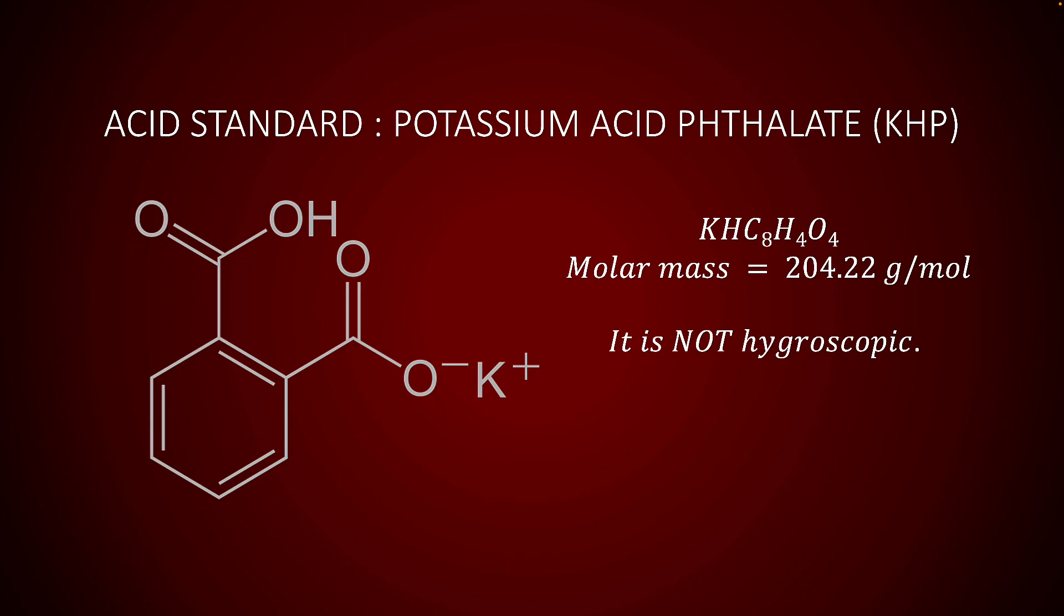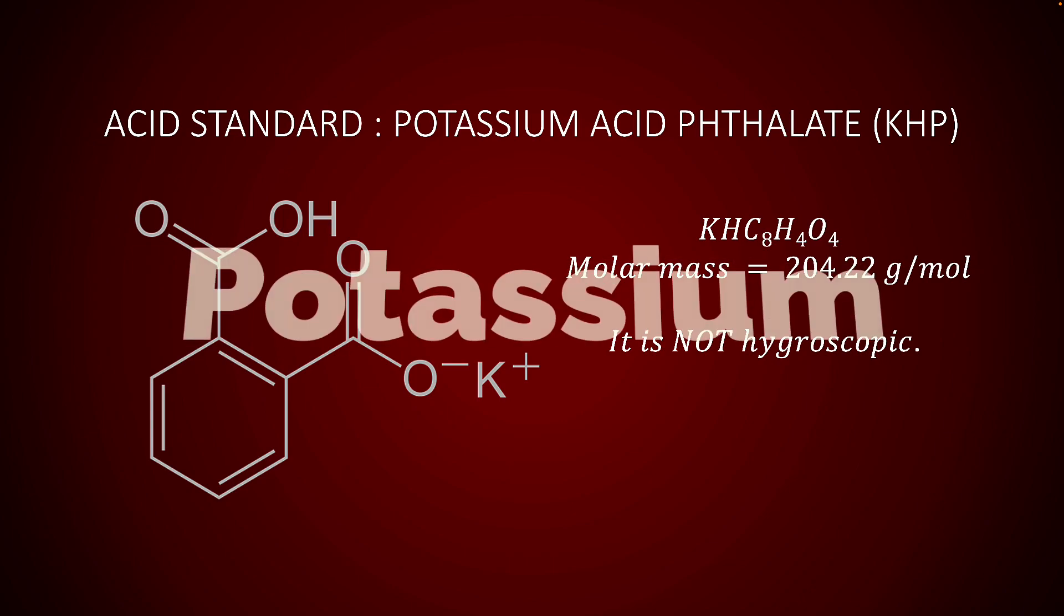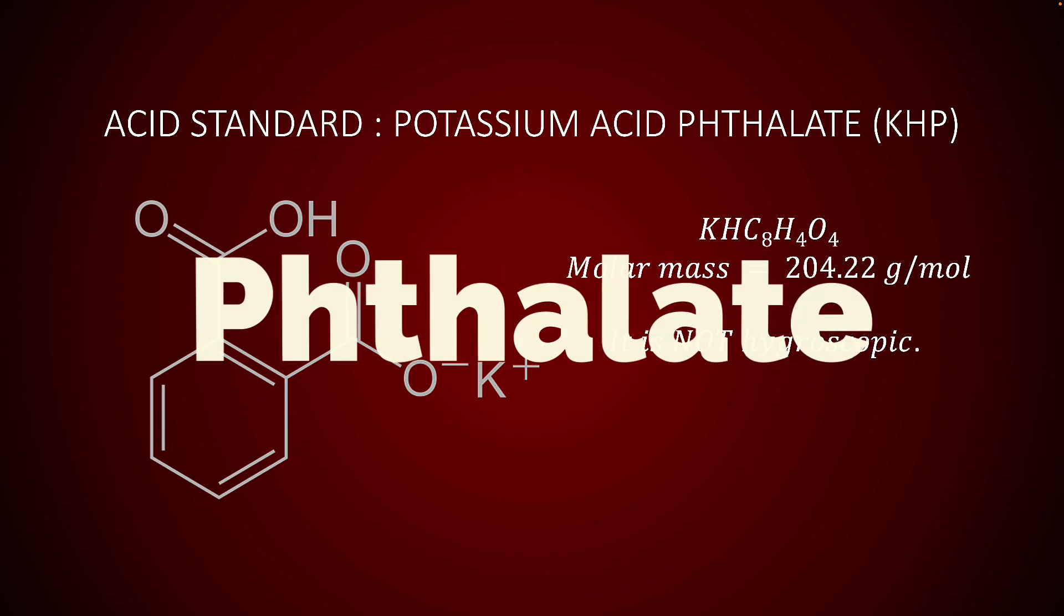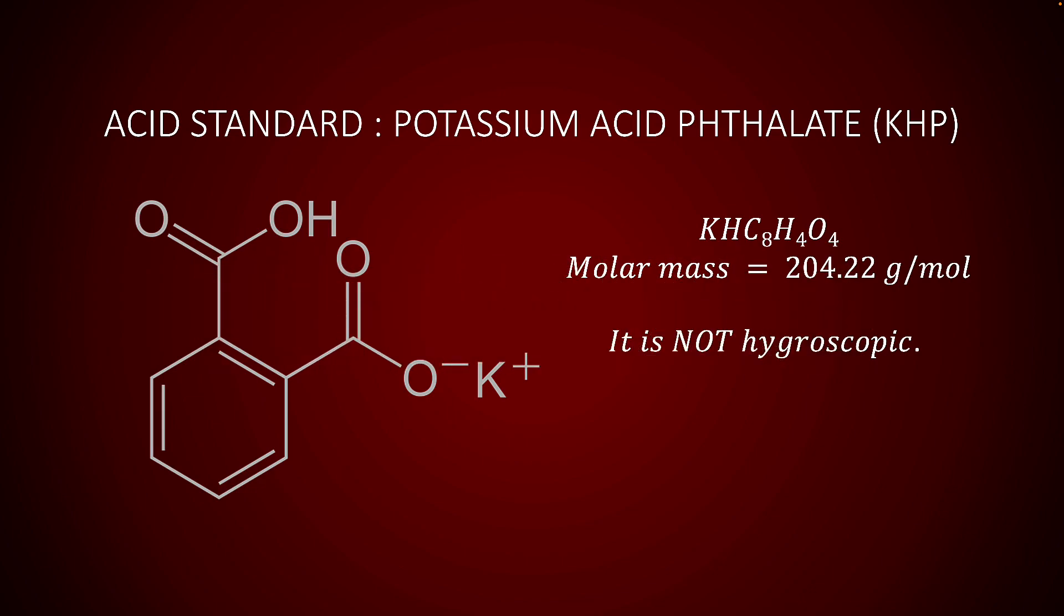The solution of known concentration involves a primary standard for acid-base titrations called potassium acid phthalate or KHP. KHP is the salt of a weak acid. The phthalate portion of the salt has one ionizable proton. KHP is not hygroscopic, which means its mass is air stable, so we can be fairly certain of the concentrations of solutions made with it.